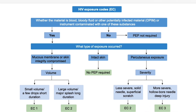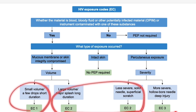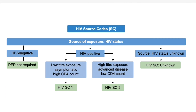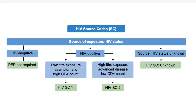So we have three exposure codes: EC1, EC2, and EC3. Now, what is the source code? Based on the HIV status of the source: if negative, there is no need for PEP. If the status is unknown, we call it HIV SC (unknown). In that case, we need help from an infectious medicine specialist who has experience handling these cases.